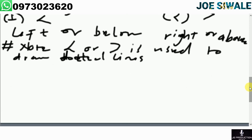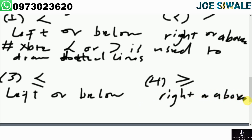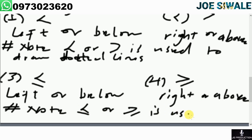For less than or equal to, you shade on the left or below. For greater than or equal to, you shade on the right or above. Note that less than or equal to, or greater than or equal to, is used to draw solid lines.